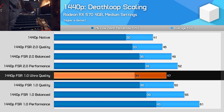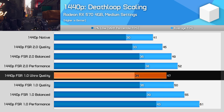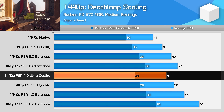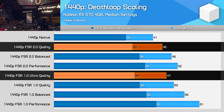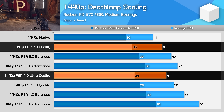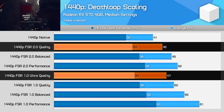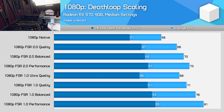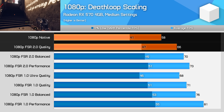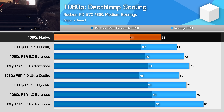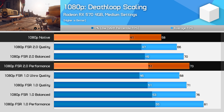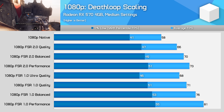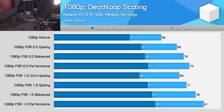FSR 1.0 is indeed faster here, which wasn't the case with RDNA2. With the 6700 XT, FSR 2.0 quality mode typically ran better than FSR 1.0 ultra quality, but with the RX 570, the less taxing FSR 1.0 runs a few frames better. However, I'd still recommend using FSR 2.0 here as the visual quality is significantly superior at 1440p. At 1080p, FSR 2.0 was more capable of a performance uplift — the quality mode gave a 14% boost over native rendering, and performance mode was 26% faster. The gains from this old mainstream GPU are quite limited, but still helpful.